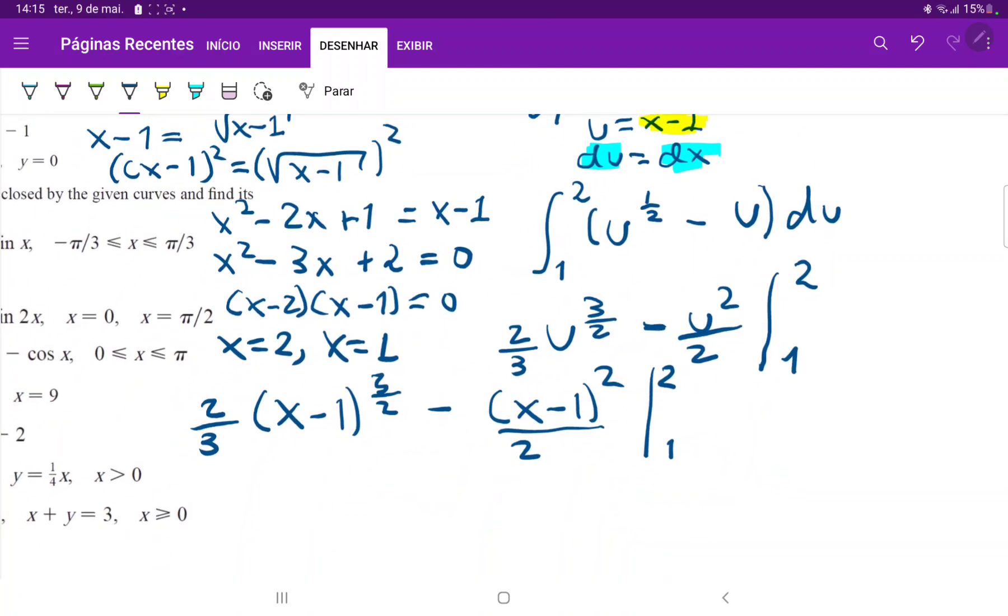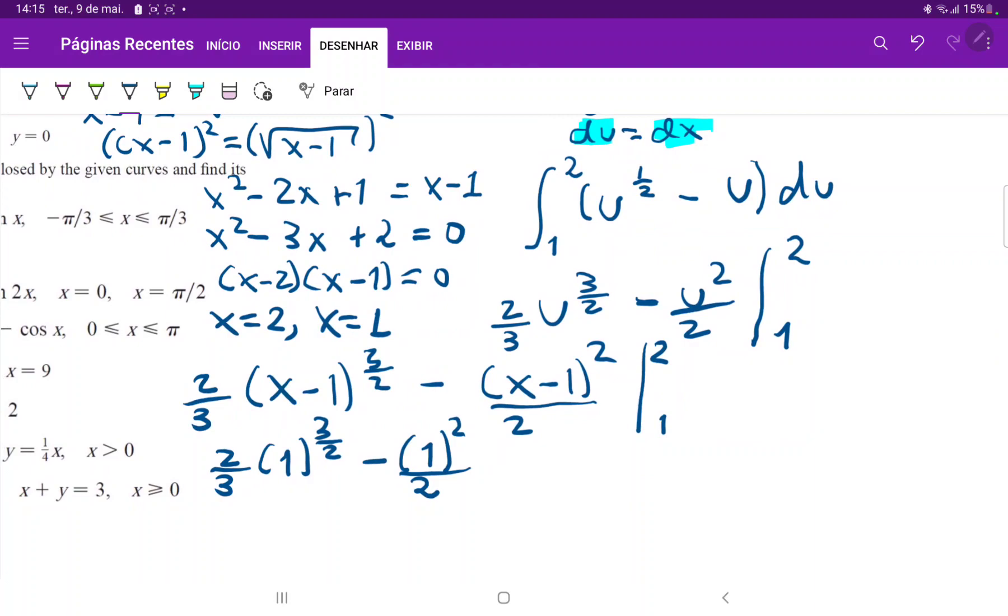So let's just apply our boundaries. Two minus one is one. So we do have two thirds times one to the three halves minus, two minus one is still one. So minus one squared over two. And then let's apply our lower boundaries. So when we apply our lower boundary, we will have one minus one, which is equal to zero. So this will just be minus zero plus zero.